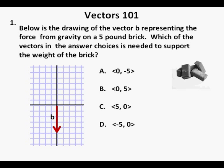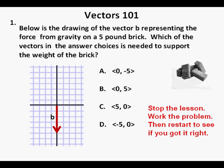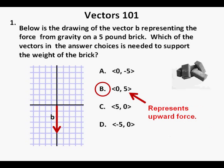Problem 1: Below is a drawing of a vector representing the force from gravity on a 5-pound brick. Which of the vectors in the answer choices is needed to support the weight of the brick? The correct answer is B, because answer B represents an upward vector that balances out the downward force from the weight of the brick.